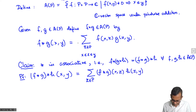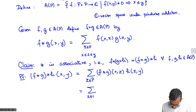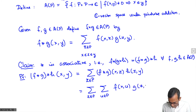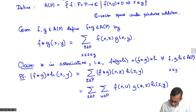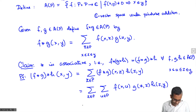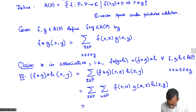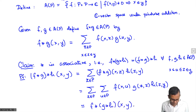Expanding f ★ g gives a sum over u ∈ P and z ∈ P of f(x, u) · g(u, z) · h(z, y). This is really a sum over all x ≤ u ≤ z ≤ y. You can easily show that this equals f ★ (g ★ h)(x, y) by reversing the order of summation, or by starting from the right-hand side. So the product is associative.